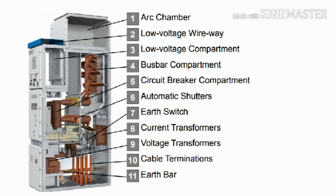Fourth is the bus bar compartment. On the back side of the switchgear panel is the bus bar compartment where the incoming supply of the switchgear is connected. Fifth, the circuit breaker is always placed in the middle of the switchgear panel. The bus bar and circuit breaker are connected so that from the top side of the panel the bus bar connects to the circuit breaker.